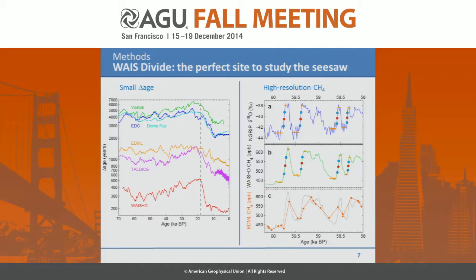We also have extremely high-resolution methane records. This is North GRIP δ18O and the new centimeter-scale methane record, and you can really see all the events are well resolved — even on the centennial scale there's correlation between these records. The orange dots are the EDML methane record, the best record available until very recently. As you can see, this is truly a quantum leap in data quality — going from roughly 100-year timescale resolution to centimeter resolution on these methane records, which greatly helps in synchronizing the two ice cores.